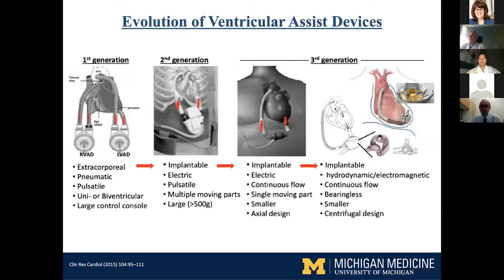The next big iteration was continuous flow, introduced with HeartMate II. People realized you don't really need pulsatile flow, and that allowed a simpler rotary mechanism — whether axial or centrifugal — to provide flow. By the mechanics alone, you could design a pump that was much more reliable and less apt to fail. The HeartMate II with its axial design still had problems — pump thrombosis, pump exchanges, strokes — though it was obviously much better than the previous generation.